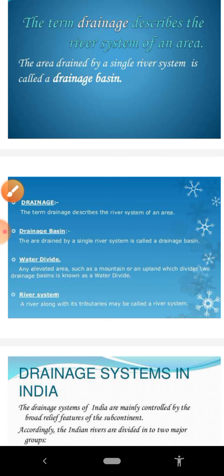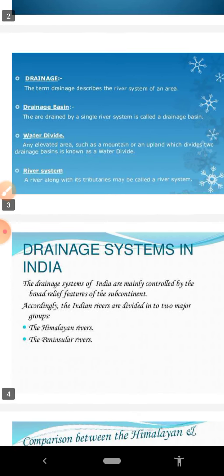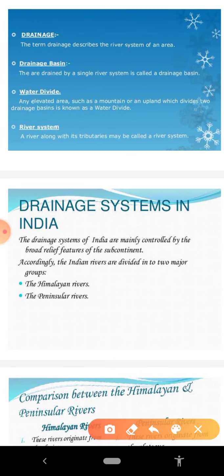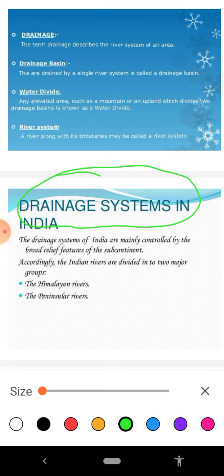Now we will discuss about the drainage systems of our country. We can broadly divide the drainage systems of India into two major groups: the Himalayan river system and the Peninsular river system. The Himalayan river system is formed by rivers originating from the Himalayas, while the Peninsular rivers are those originating from the hills of the Peninsula.